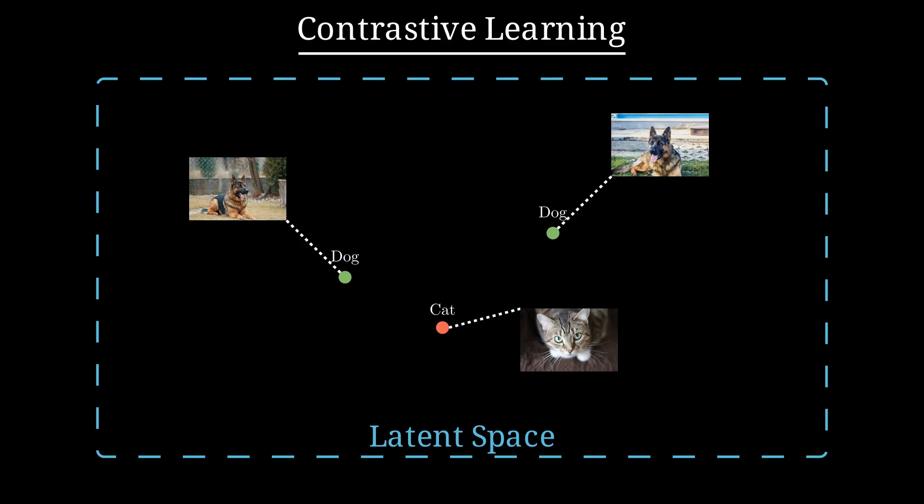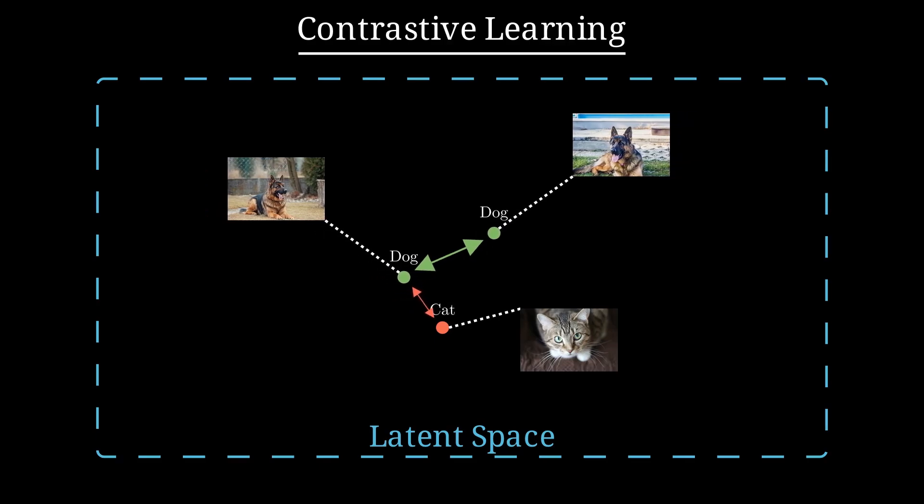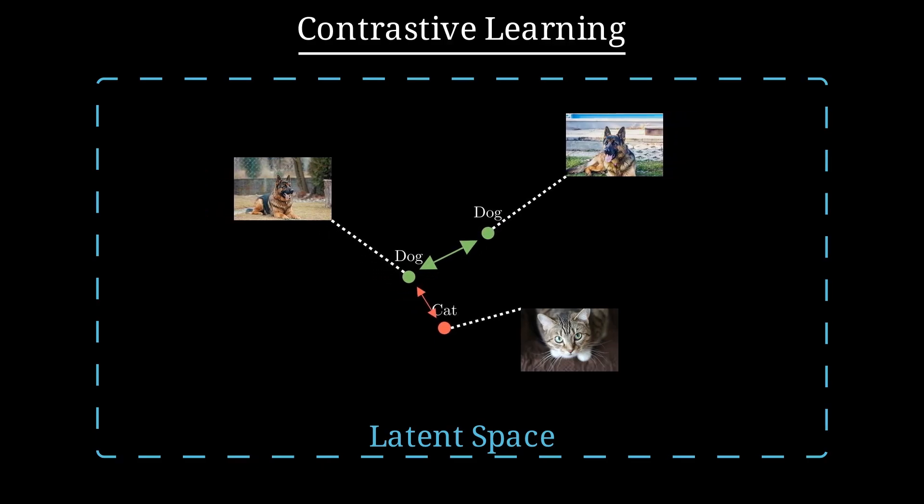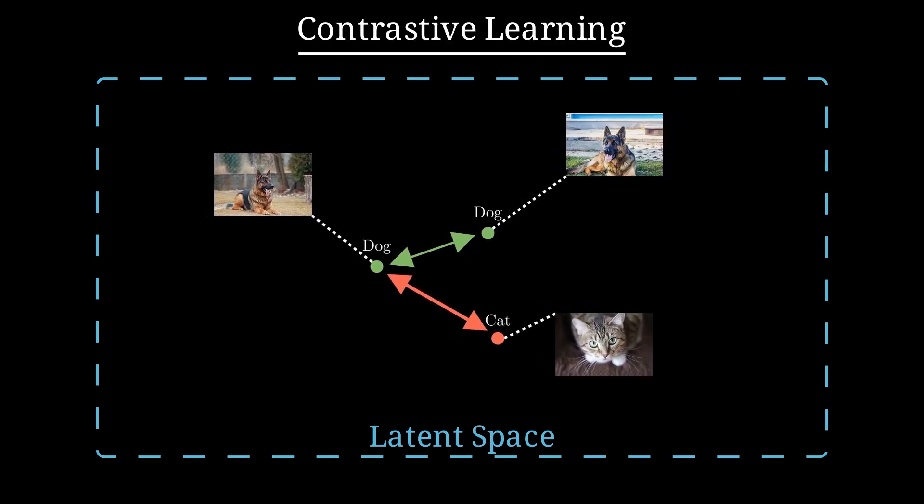This general idea of clustering similar things together in the latent space isn't new. But what makes contrastive learning unique is how it explicitly enforces these relationships during training through a special loss function. This loss function essentially pulls together representations of similar objects, and at the same time pushes apart those of dissimilar objects.